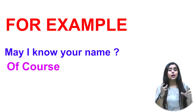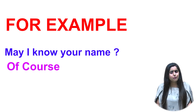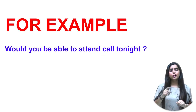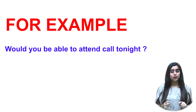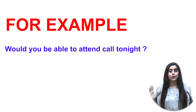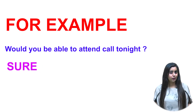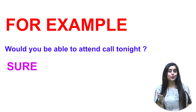For example, 'May I know your name?' Instead of saying yes, you can say 'of course.' 'Of course' is used when you are willing to do something or say something. For example, 'Would you be able to attend the call?' Here you are enthusiastic, so you can say 'sure' to give a positive response.